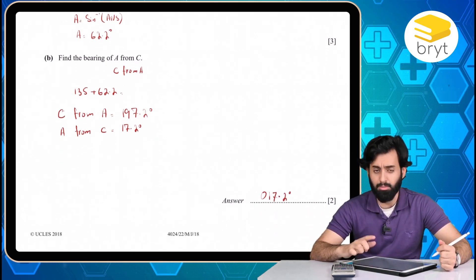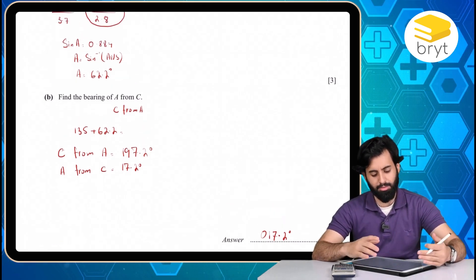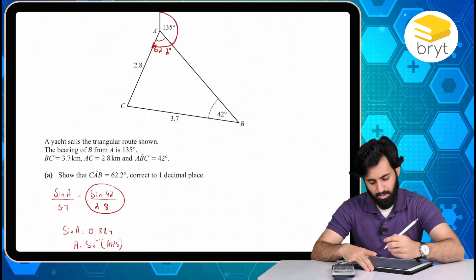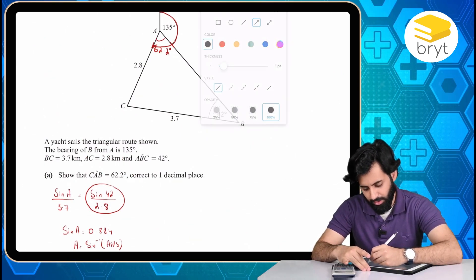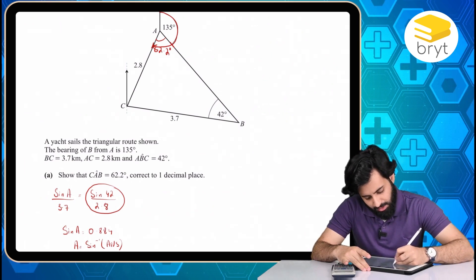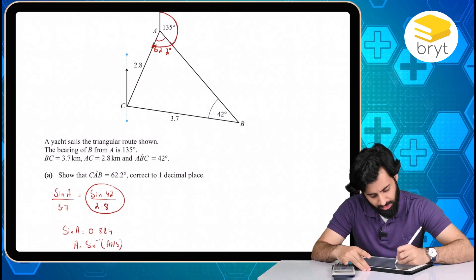Now, the other way, the usual way, if you were to find out the bearing of A from C, the way it is, so this is what you would have done. So we would have drawn a north at C. So there it is. There's a north at C.